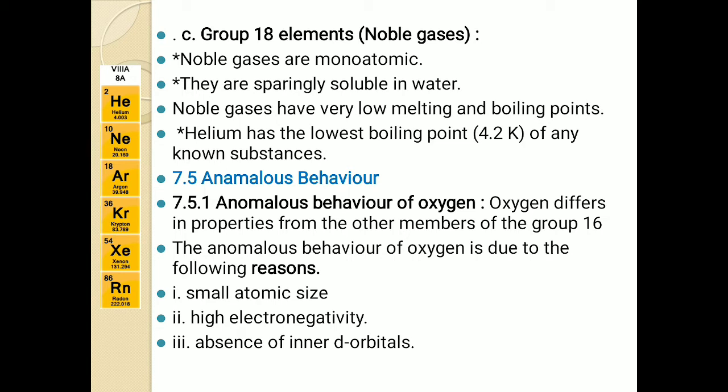One more very important reason: as they are in the second period, their second shell is the last shell. In the second shell, there are no d-orbitals — d-orbitals are introduced in the third shell. Hence, all of these elements in the second period lack d-orbitals, meaning there is an absence of d-orbitals, and this has a much greater effect — it affects many physical and chemical properties. So these are the reasons why oxygen behaves anomalously.